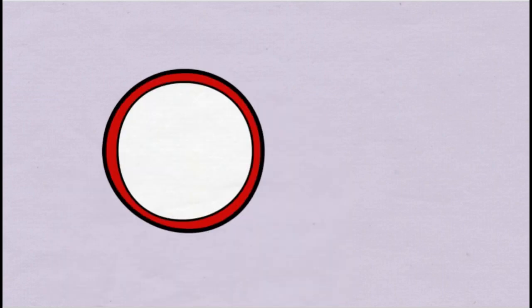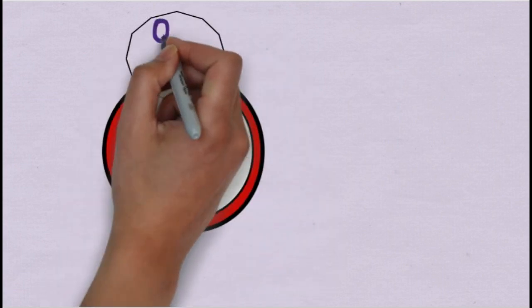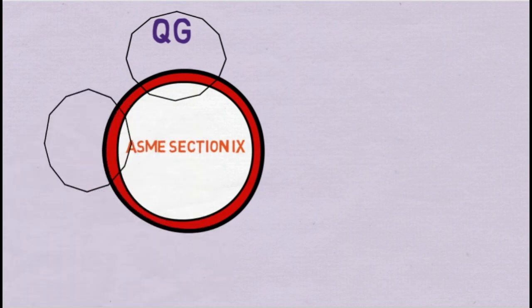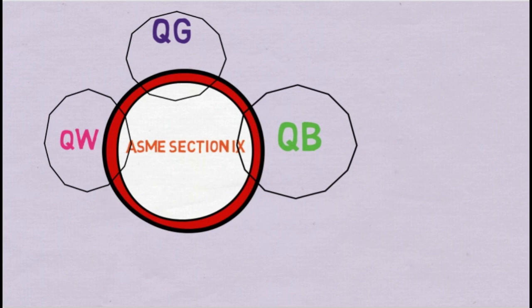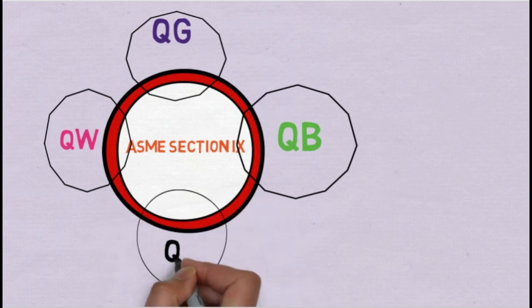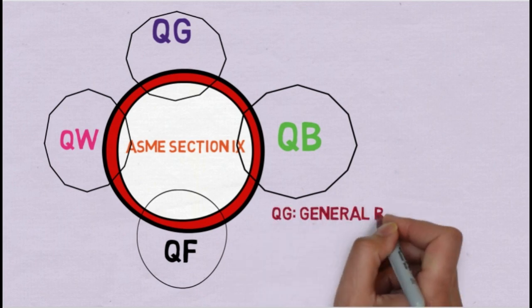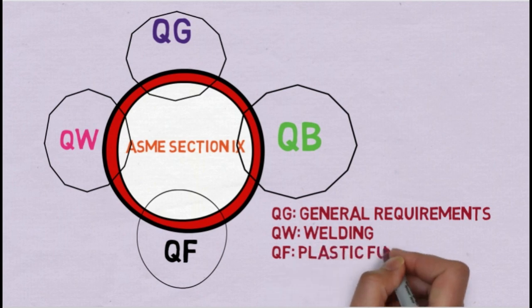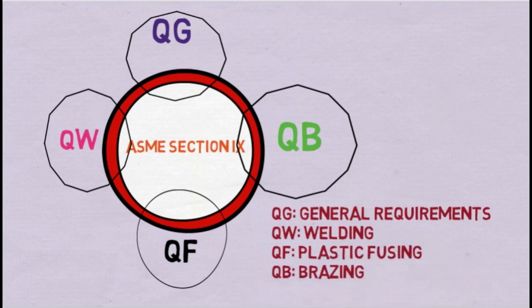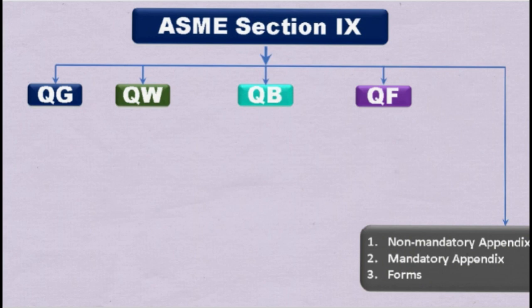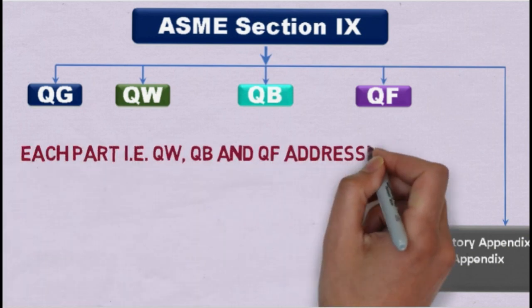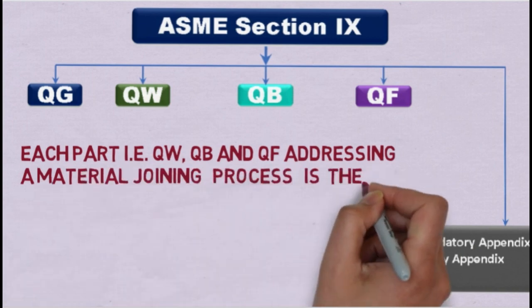The user of Section 9 should be aware of how Section 9 is organized. It is divided into four parts. Each part in ASME Section 9 addresses a material joining process and is then divided into articles. The articles for each material joining process are divided accordingly, as we can see here.